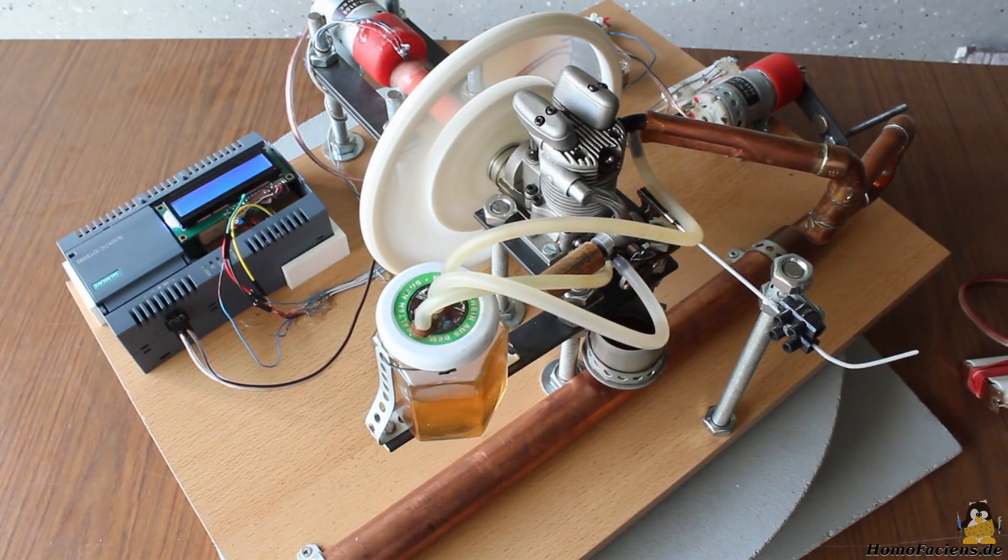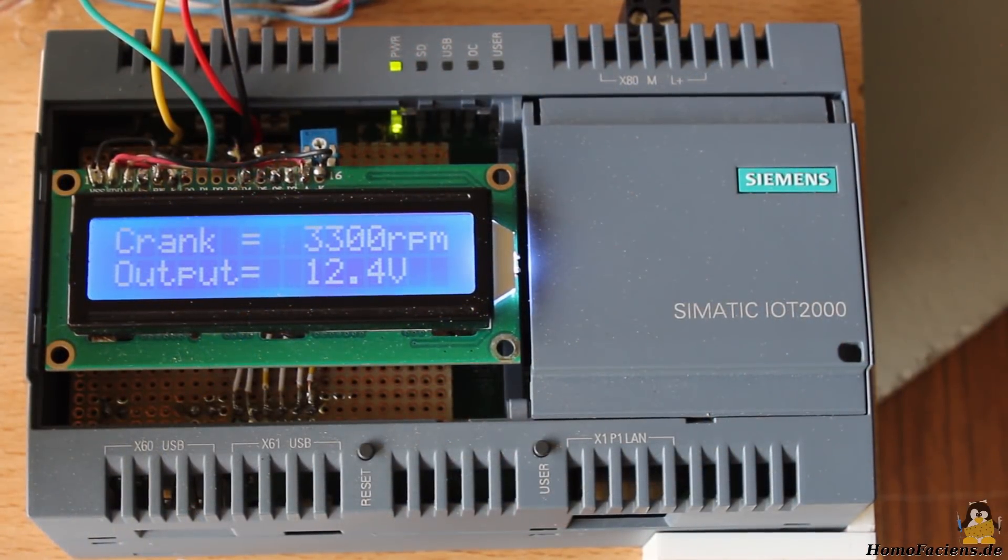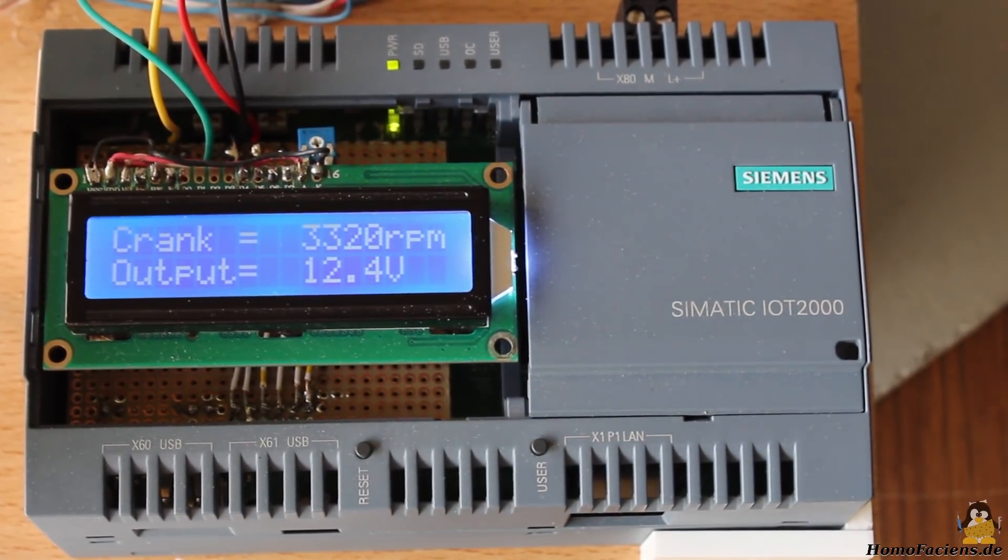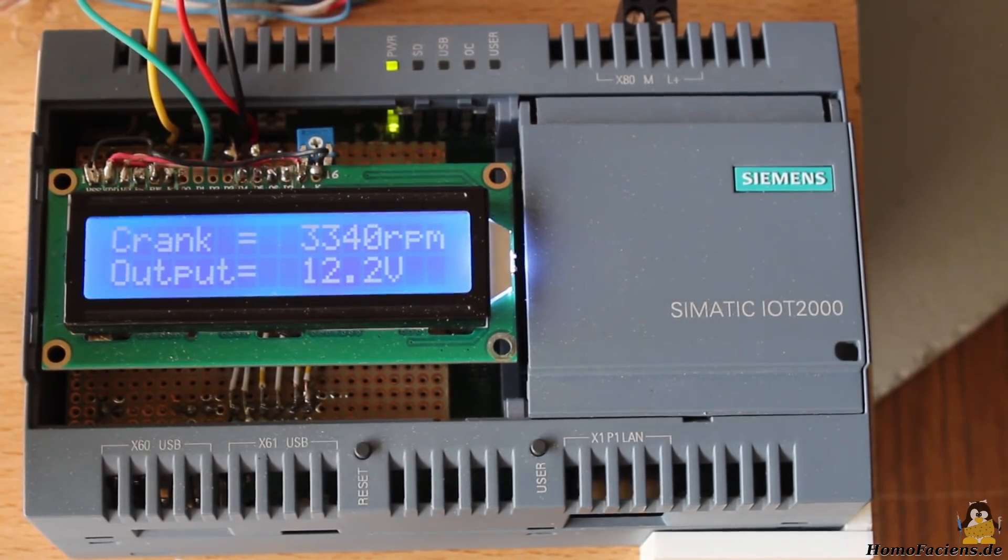The speed of the engine's crankshaft is 3300 revolutions per minute. With a transmission of 1 to 2.5 we get 8250 revolutions per minute on the electric generator. The resulting output voltage on the terminals of the generator is approximately 12 volts.